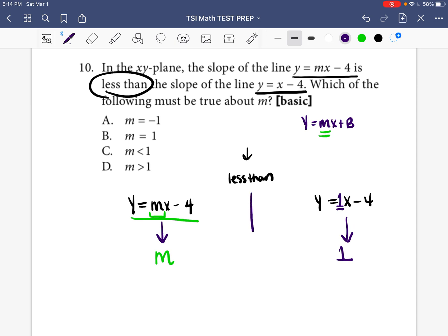So now we just have to make a less than sign, and a less than sign goes that way. Okay, so our answer is M is less than 1. So our answer is going to be C.